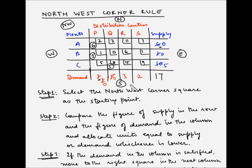Since demand in column Q is satisfied but supply for plant C is not, we move to the right square in the next column, which is CR. Demand for distribution center R is 3 units and supply availability is 5 units, so we allocate 3 units to CR. The demand for distribution center R is now completely satisfied and becomes zero, while supply for C reduces to 5 minus 3, which is 2 units.